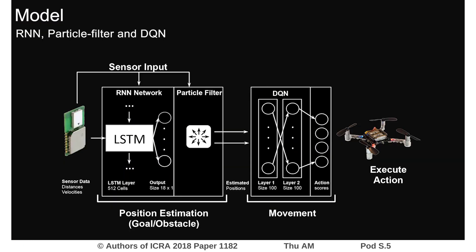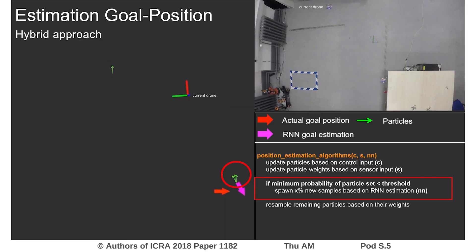In order to make a valid movement decision, the network requires a position estimation of the closest drone and the target position. This is accomplished by the recurrent neural network in combination with the particle filter. The recurrent network estimates target and drone positions based on a sequence of states, and the filter uses these predictions to spawn new particles if the probability of the current estimation is under a certain threshold.